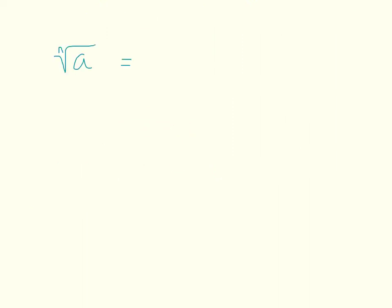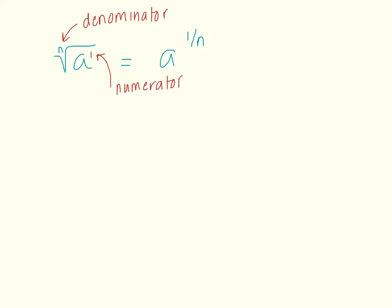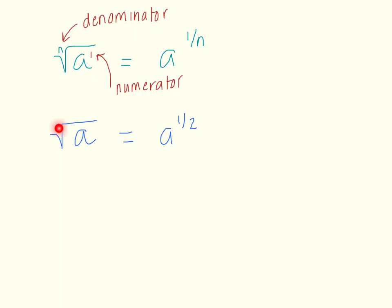Now we're going to connect that radical to a fractional exponent. If we have the nth root of a, that actually becomes a to the 1 over n power. The numerator — this 1 — comes from whatever the exponent is, and our denominator, which is n, comes from the index number. So the nth root of a equals a to the 1 over n. For example, the square root of a can be written as a to the 1 half power: 1 from the exponent, 2 from the index number.